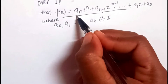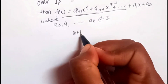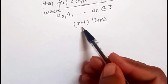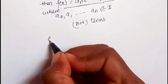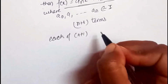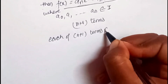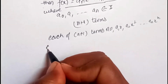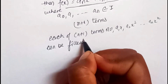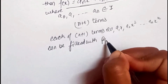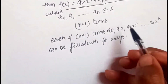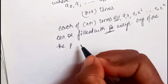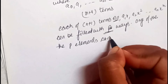In this polynomial f(x) of degree n, we have n+1 terms. Each of these n+1 terms — that is, a₀, a₁x, a₂x², ..., aₙxⁿ — can be filled in p ways, because any of the p elements of the field can be chosen as the coefficient.